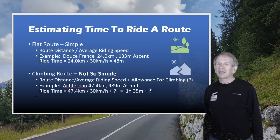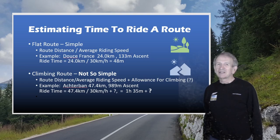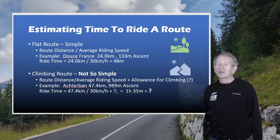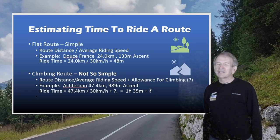Estimating your ride time for a flat route is pretty simple. Take the route distance and divide it by your expected average riding speed. For example, the Route de France is 24 kilometers long with only 133 meters of climbing, so virtually no climbing. If you expect to ride at an average speed of 30 kilometers an hour, divide 24 by 30 and that gives you 48 minutes.